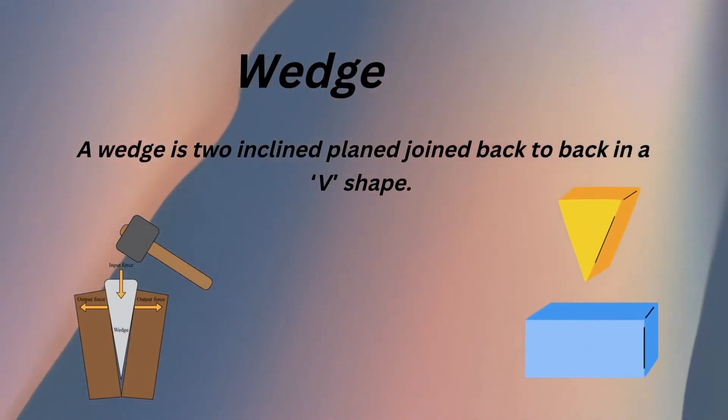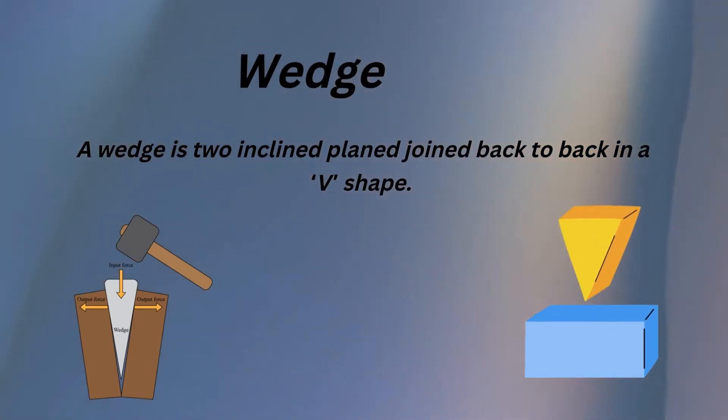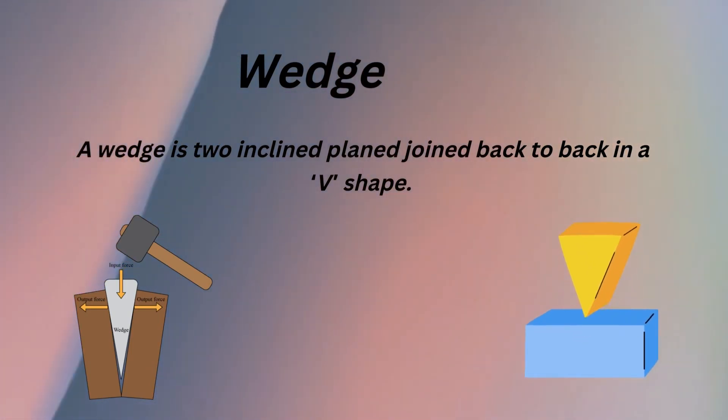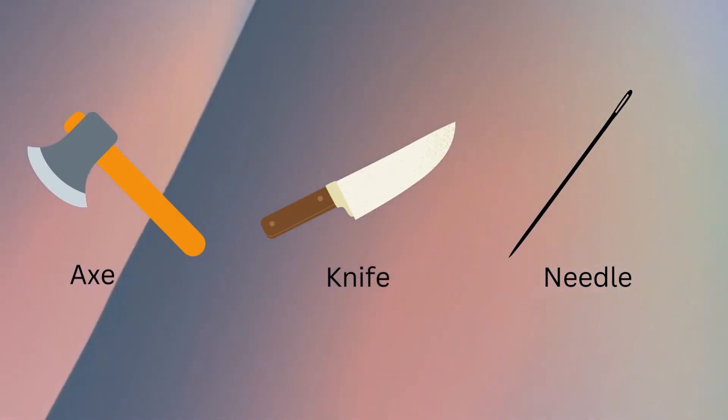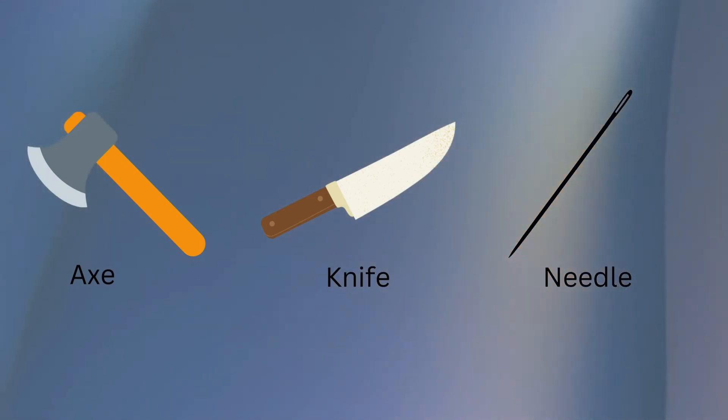After the pulley comes the wedge. A wedge is two inclined planes joined back to back in a V-shape. A wedge has a sharp edge at one end. It is used to cut or split things apart. The following objects around us are examples of a wedge: ax, knife, needle.